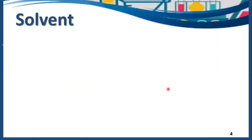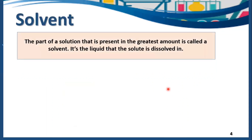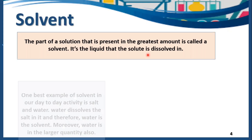Moving on, we have solvent. What is solvent? The part of a solution that is present in the greatest amount is called a solvent. It's the liquid that the solute is dissolved in. Most of the time the solvent is in a liquid state.